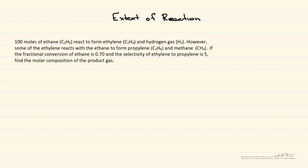In this screencast, we're going to use the extent of reaction method for two reactions. We have 100 moles of ethane that react to form ethylene and hydrogen gas: C₂H₆ → C₂H₄ + H₂.